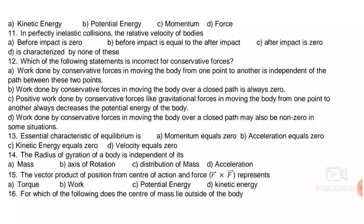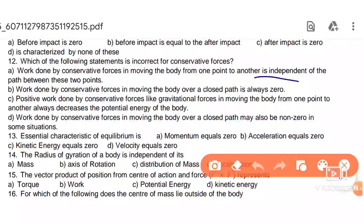Statement three: positive work done by a conservative force like gravitation decreases the potential energy — this is correct. Statement four: work done by a conservative force over a closed path may be non-zero — this is incorrect, because it is always zero. Therefore, option D is the right answer.